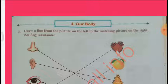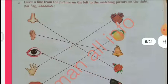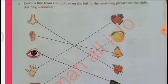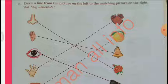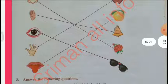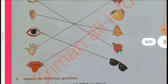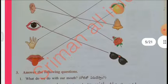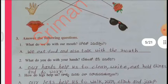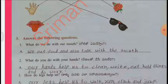Draw a line from the picture on the left to the matching picture on the right. Nose — Smell — Flower. Ear — Bell. Eye — Spectacles. Hand — Clap. Tongue — Taste — Fruit.